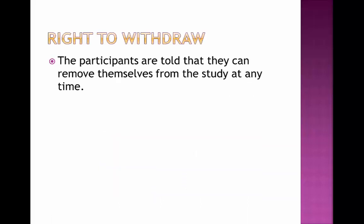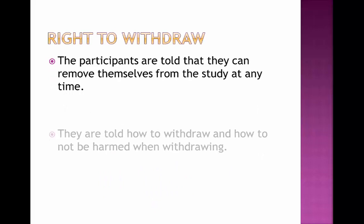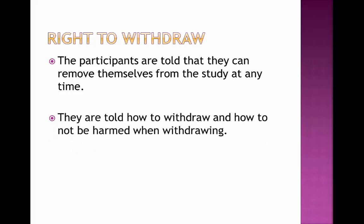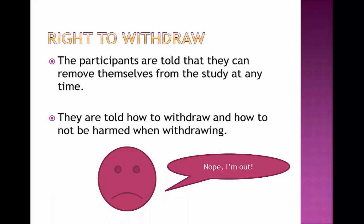The right to withdraw. In this instance participants are told that they can remove themselves from the study at any time they want. They are told how to withdraw and how not to be harmed when withdrawing. For example, in Zimbardo's prison experiment participants weren't really given the right to withdraw at all, and as a result the people in the experiment suffered psychologically in terrible instances — for example, prisoners who actually had to be removed from the experiment physically because they were being psychologically traumatized. If they had been given the right to withdraw when they felt slightly traumatized, they could have just left and prevented a lot of psychological harm.